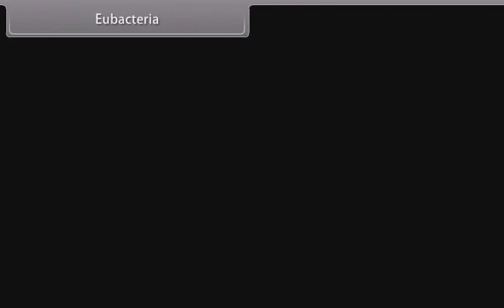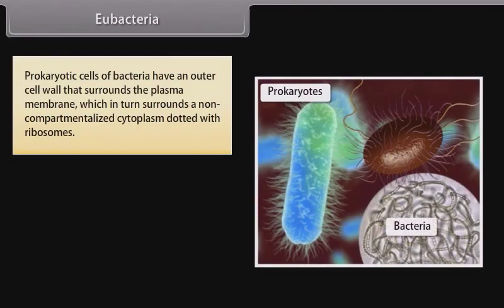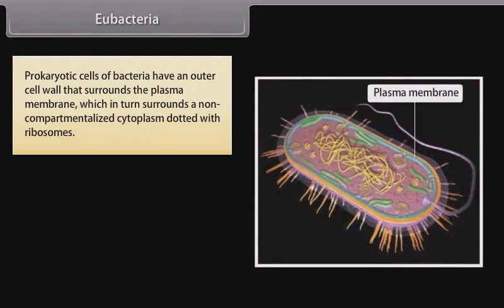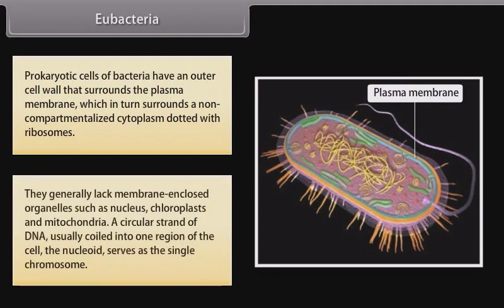Eubacteria: prokaryotic cells of bacteria have an outer cell wall that surrounds the plasma membrane, which in turn surrounds a non-compartmentalized cytoplasm dotted with ribosomes. They generally lack membrane-enclosed organelles such as nucleus, chloroplasts, and mitochondria. A circular strand of DNA, usually coiled into one region of the cell called the nucleoid, serves as the single chromosome.